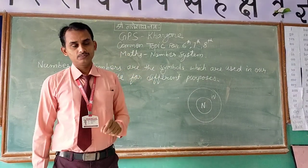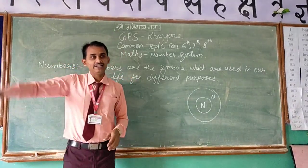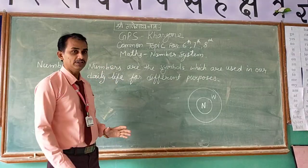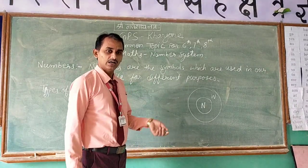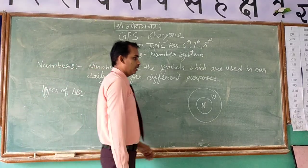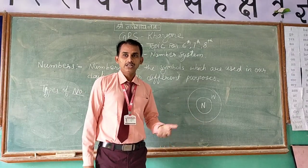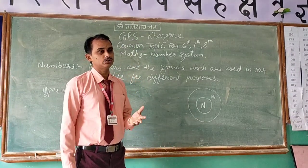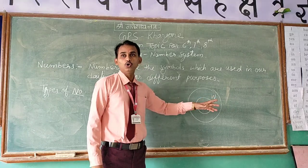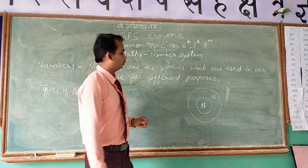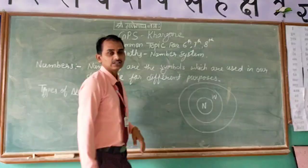Numbers starting from 0 and going up to infinity are known as whole numbers. Whole means complete, because without 0 it is not possible to make numbers up to infinity. Now suppose we are at 0 and we move two steps to the left side — then it will be minus 2. So, minus 2 does not belong to natural numbers or whole numbers. For such numbers, we take another group known as integers.